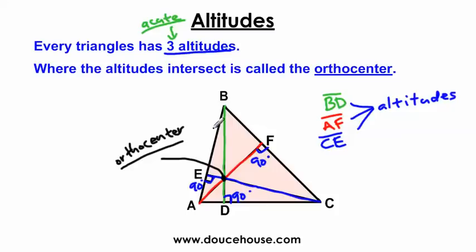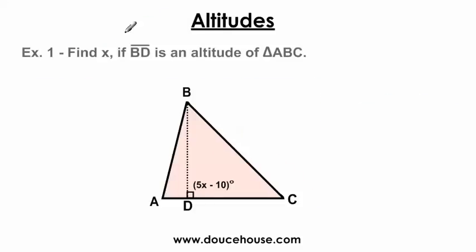You're always going to see the altitudes intersecting at the same location called the orthocenter. I'm going to have a separate video on orthocenter if you want to watch that, but right now I'm going to do a couple of example problems. Let's look at the first one. It says: find X if segment BD is an altitude of triangle ABC. So we know this segment here is an altitude, and we need to find X.